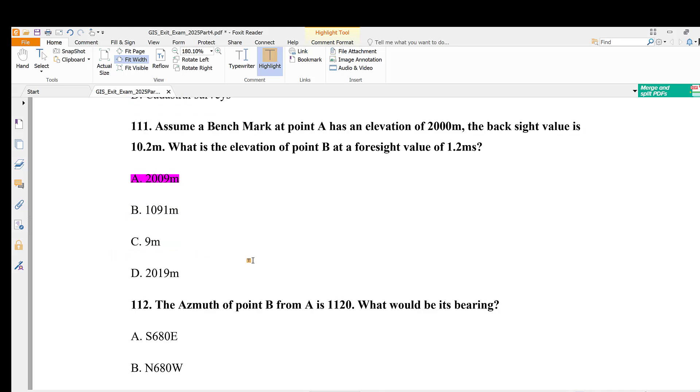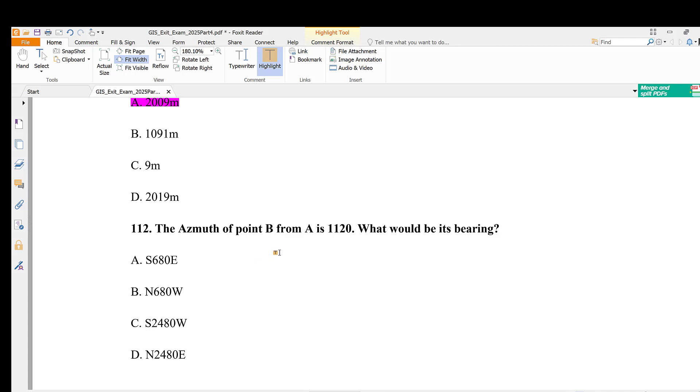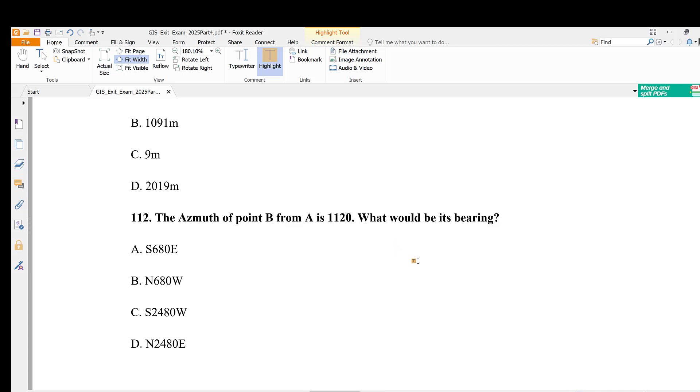Question 112: The azimuth of point B from A is 110 degrees 20 minutes. What will be its bearing? The bearing is 680 degrees east.